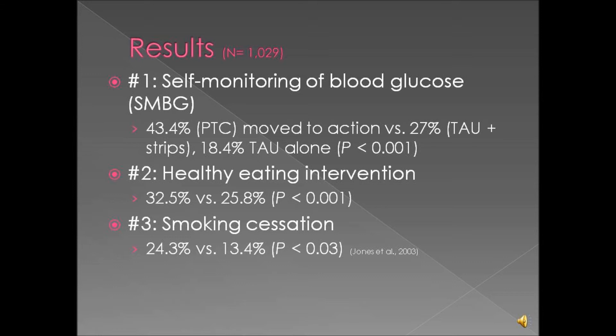In the results, they recruited about 1,000 people. The first outcome measured was Self-Monitoring of Blood Glucose (SMBG) — patients taking their blood glucose three times a day before meals and at bedtime. 43.4% of people in the Pathways to Change group moved to stage four, the action stage, versus 27% of people with usual care plus glucose strips, and 18.4% with usual care alone. These results are statistically significant.